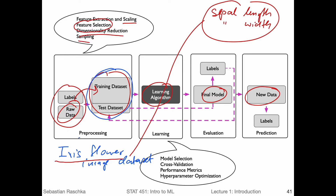Assuming we have done the preprocessing, we would then provide the learning algorithm with the data and fit the model. When we have the data set, we usually divide it into two parts: a training set and a test data set. The training data set is used to fit the algorithm to obtain the model. Then we use the test data set as an independent data set to evaluate the performance of the model. Before we use the model on real new data, we want to see how well it performs. So we pass the test data to the final model.